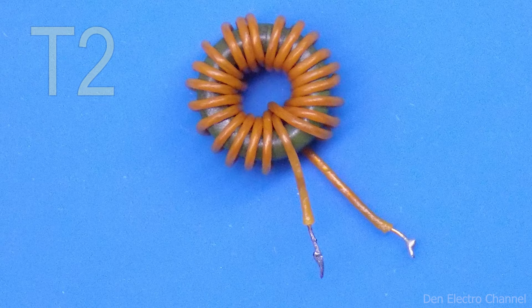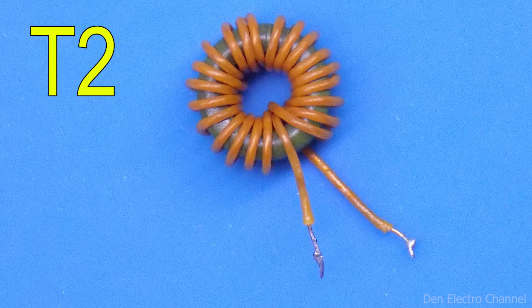On the transformer, you first need to make 21 turns. This will be the primary winding. Be sure to pay attention to the placement of the wires, how they enter and exit the core.